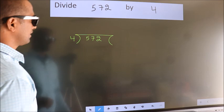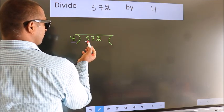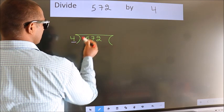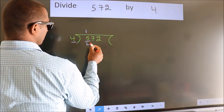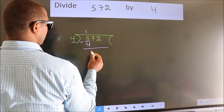Next. Here we have 5, here 4. A number close to 5 in 4 table is 4 once 4. Now we should subtract. We get 1.